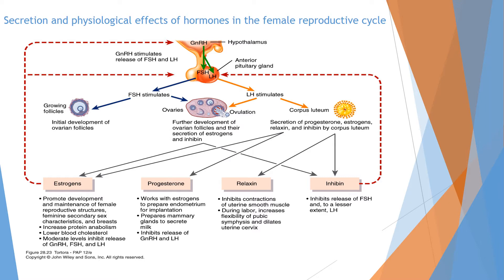The gonadotropin releasing hormone from the hypothalamus — GnRH — will stimulate the anterior pituitary gland to secrete FSH and LH. FSH is follicle stimulating hormone and LH is luteinizing hormone.